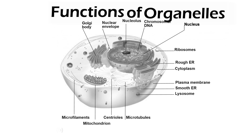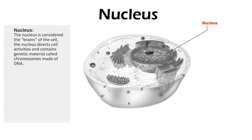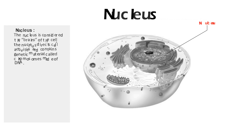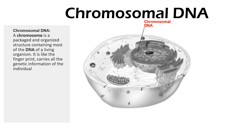The nucleus is considered the brains of the cell — it directs cell activities and contains genetic material called chromosomes made of DNA. Chromosomal DNA: a chromosome is a packaged and organized structure containing most of the DNA of the living organism.